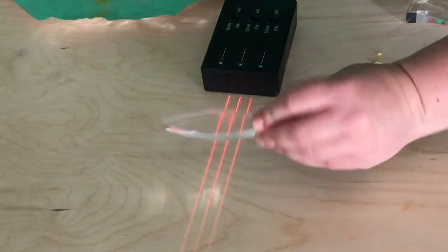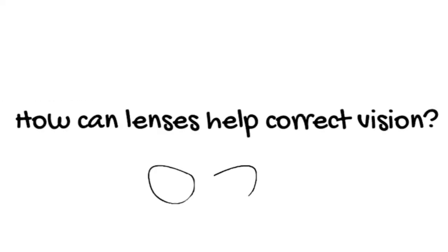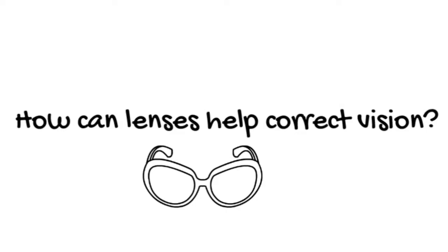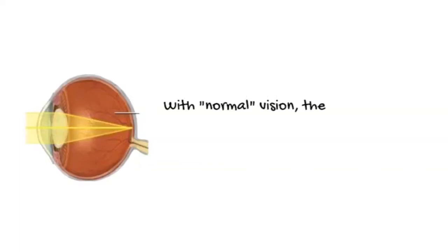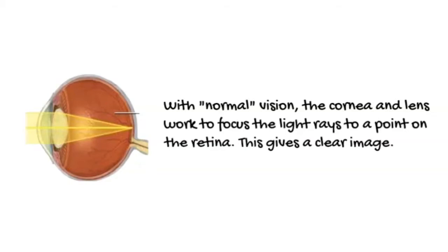And again, let's take a closer look. When the eye does not need any correction, or with normal vision, the cornea and lens work to focus the light rays to a point on the retina. This gives a clear image.